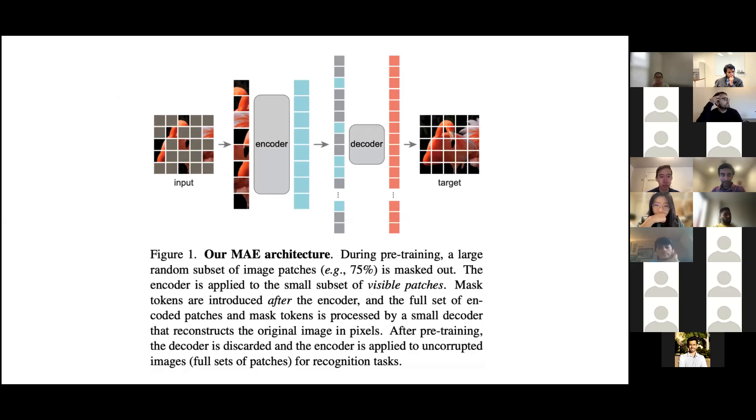With all those differences taken into mind, the authors propose masked autoencoders, or MAE. This is a general overview of how the architecture works. You take a large random subset of the image patches, around 75%, and mask them out. The encoder, or vision transformer, is applied to a very small subset of visible patches. Then mask tokens are introduced after the encoder, and the decoder processes the full set of encoded patches and mask tokens to reconstruct the original image in pixels. After pre-training, you can throw away the decoder and use that encoder for recognition tasks downstream, such as classification, object detection, or semantic segmentation.